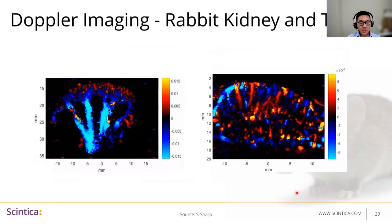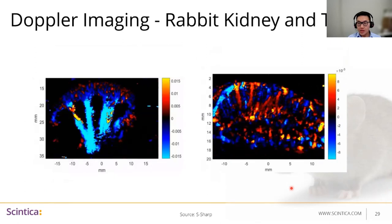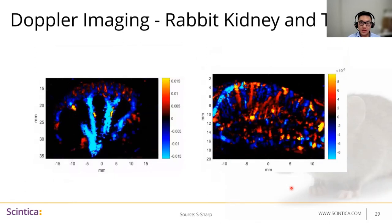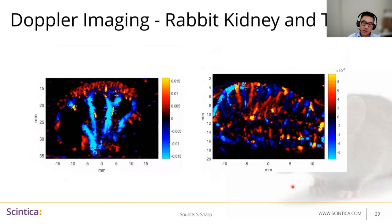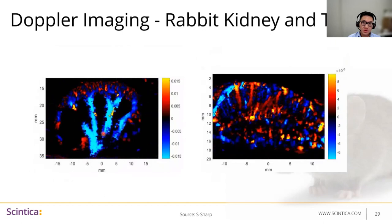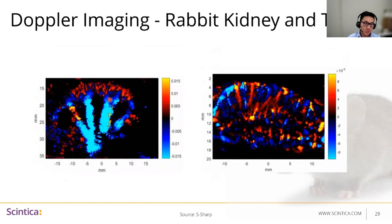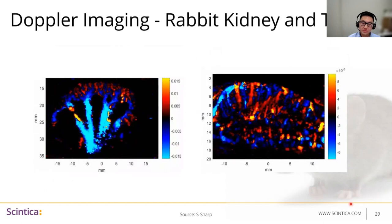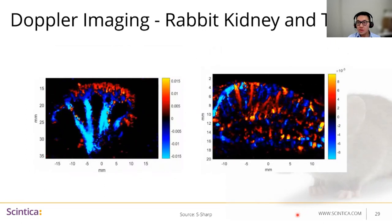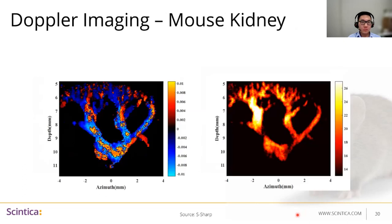These are some in-house images by S-Sharp. In this case it's a rabbit kidney and testes using a normal New Zealand white rabbit and an 8 megahertz linear transducer — the kidney on the left, the testes on the right — and you can see how clear the Doppler images are. Finally, one last example is a mouse kidney, also in-house with a BALB/C mouse, using an 18 megahertz linear array transducer.